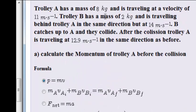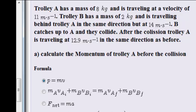Trolley A has a mass of 8 kilograms and is traveling at a velocity of 11 meters per second. They didn't give a specific direction, so let's just draw trolley A. This is trolley A, and it was 8 kilograms, and it is traveling in that direction at 11 meters per second.